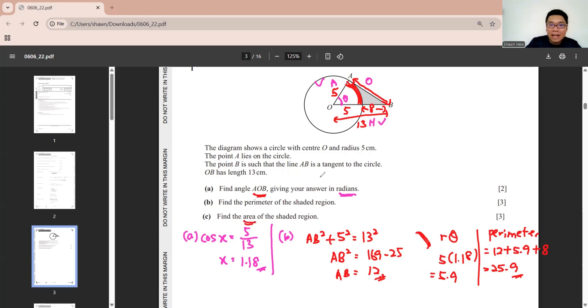Last, you need to find the area of the shaded region, so this question is quite straightforward. You just use the triangle minus sector. Here is 5, here is 12. We just use half base times height. Here we just use half R squared theta. Done. First question.